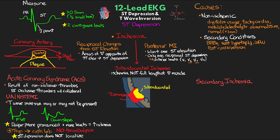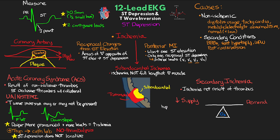For example, if you see ST depression in leads V3 and V4, this doesn't necessarily mean that the ischemia is taking place in the anterior wall. For secondary ischemia, this is where we have ischemia that's not the result of a thrombus — we see this when there's an imbalance in oxygen supply and oxygen demand. On the supply side, if oxygen supply is reduced — such as with hypotension, anemia, hypoxemia, or toxins — this can lead to ischemia. On the demand side, if oxygen demand is increased, such as with high cardiac output states like sepsis, Addison's disease, hyperthyroidism, or high catecholamine states like tachycardia and hypertension, we can again see an imbalance leading to ischemia.